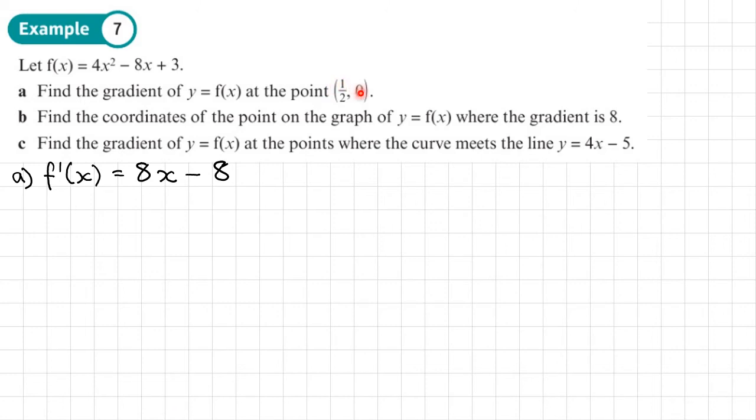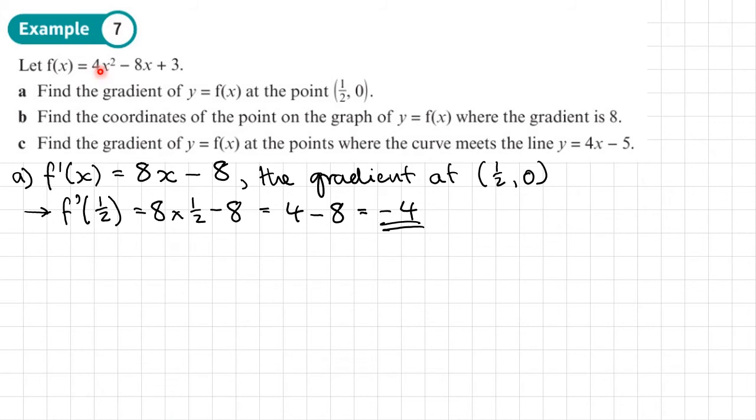And what we want to do is to work out what's the gradient at this point. Well, how do we find a gradient? Well, we put half. We put the x coordinate into this to get the gradient. So the gradient at a half, 0. So we don't need the y coordinate, just the x coordinate. That's going to be basically f dash of a half. So we put the half in where x is. So we do 8 times a half minus 8. So that's going to be 4 minus 8. So we get a gradient of negative 4. So this quadratic here, if we were to go to the x coordinate of a half and draw a tangent at that point, we'd get a gradient of negative 4. So that would be sloping downwards at that point.